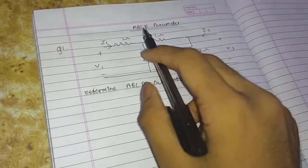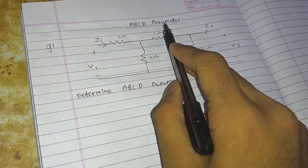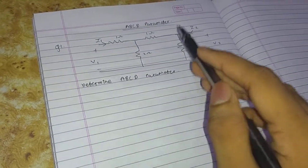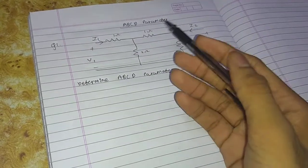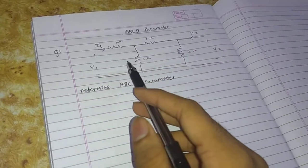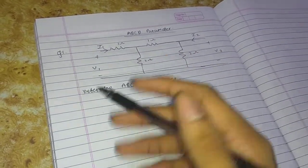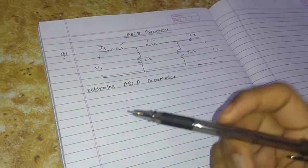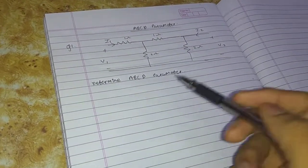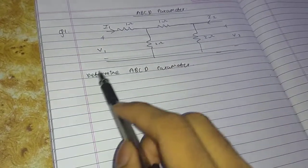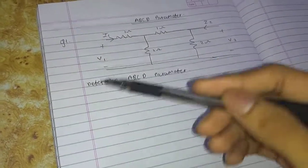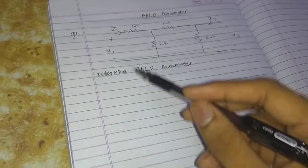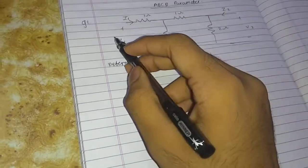Welcome back. Today we are going to talk about ABCD parameters. As discussed in the previous video, in order to get ABCD parameters and Y parameters, you need to first calculate the Z parameter. So my approach will be to find out the Z parameter first. Let us start.